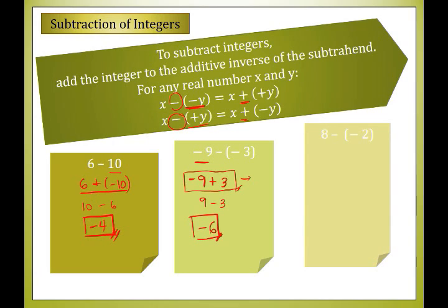Last subtraction example: 8 minus negative 2. We copy the minuend 8, change the operation to addition, and change negative 2 to its additive inverse, which is positive 2. We now perform 8 plus 2, which gives 10. Since they are both positive, the sign is positive, so the answer is positive 10.